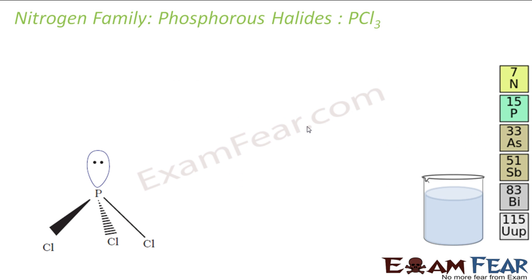In this lesson on phosphorus halides, we will study two types: phosphorus trichloride and phosphorus pentahalides. So phosphorus halides are of two forms: PX3 and PX5.